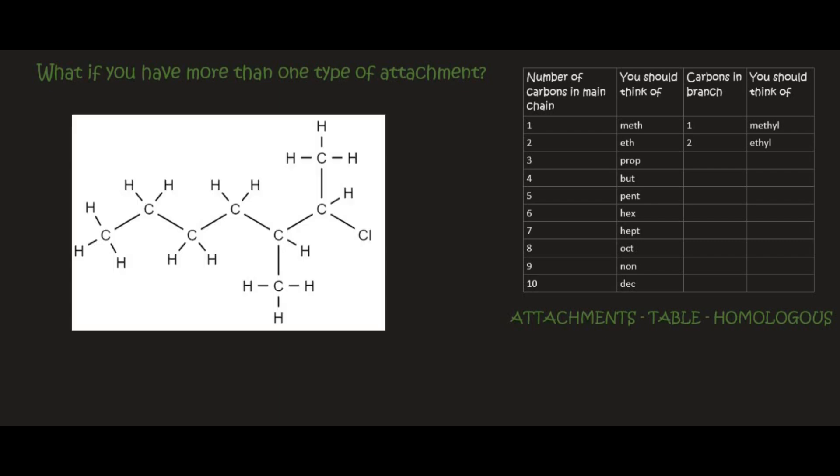Remember, regardless of whether there are more than one type of attachment or not, step one is always to find the longest chain. If you go through this one you would find that that is seven. From seven on the table, that's hept. If you look at this molecule you'll see that it looks like an alkane, but just watch out for that halogen. So this is a haloalkane, but we know that haloalkanes just end with the word ane. We've taken care of table and homologous.